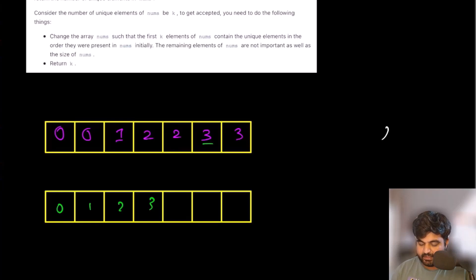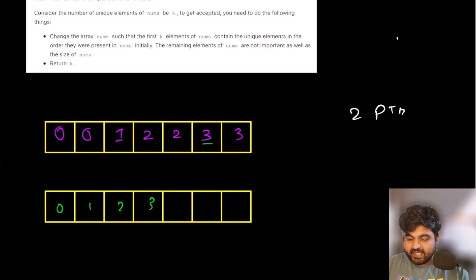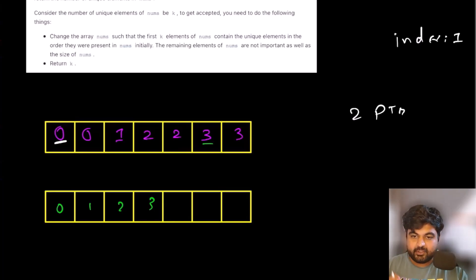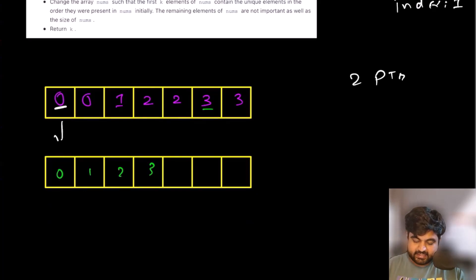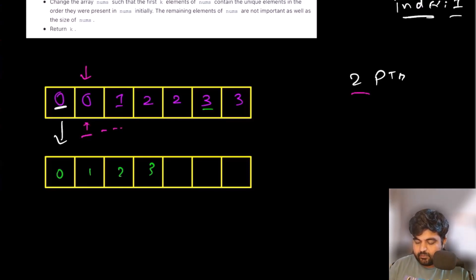The next way is to do something smarter. This is a two-pointer solution, so we are going to use two pointers. We are also going to store an index value, initialized at position one. This first value is guaranteed to be distinct because we are told there is at least one value in the array, and that value has to be part of the original distinct values — so we place it directly and set the index pointer at value one.